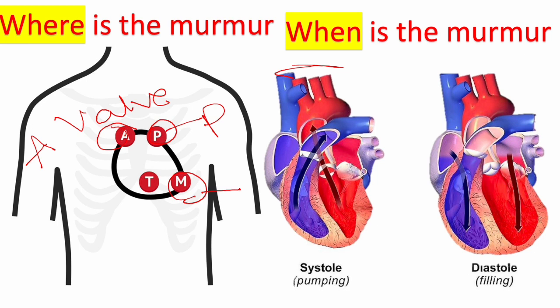So: where is the murmur tells you which valve — aortic, mitral, tricuspid, or pulmonary — and when is the murmur, systolic or diastolic, tells you the type of lesion in that valve — is it aortic stenosis or regurgitation? If you answer those two questions, you will be able to figure out any heart murmur.